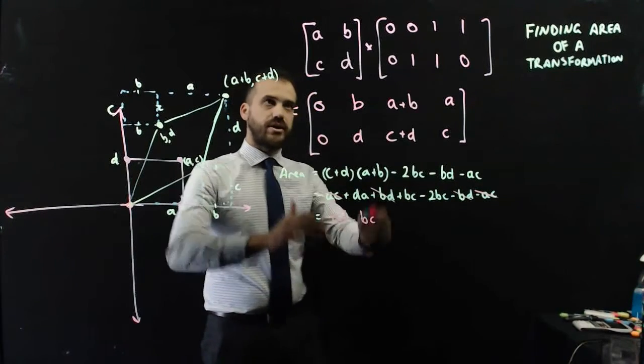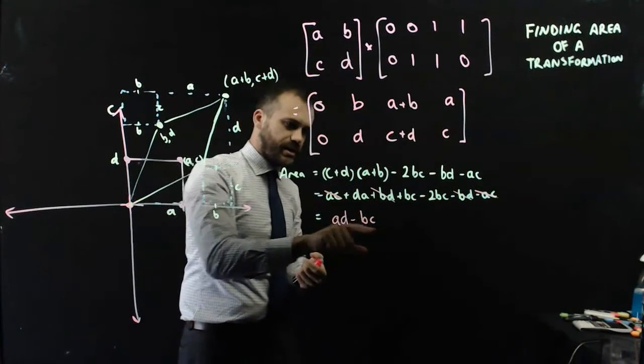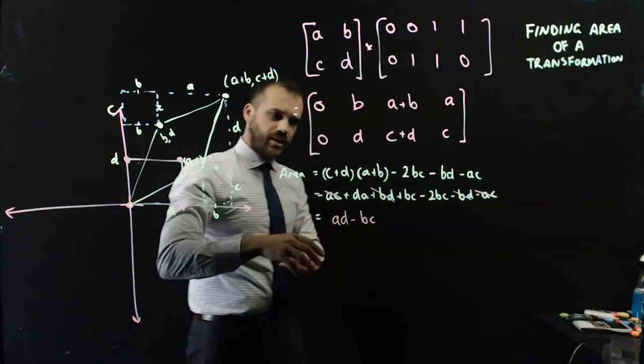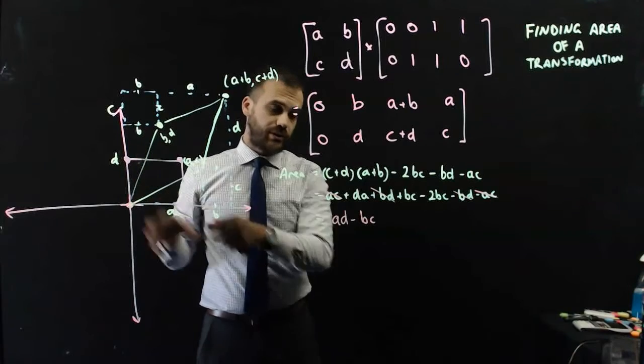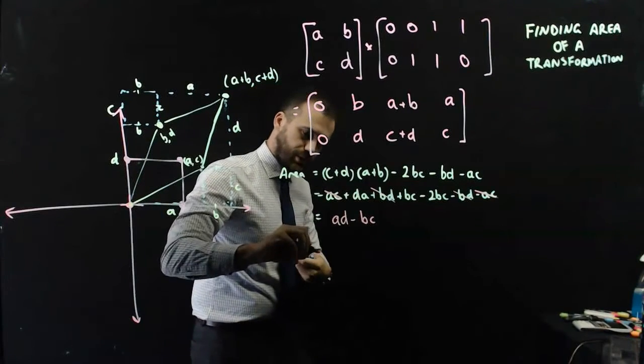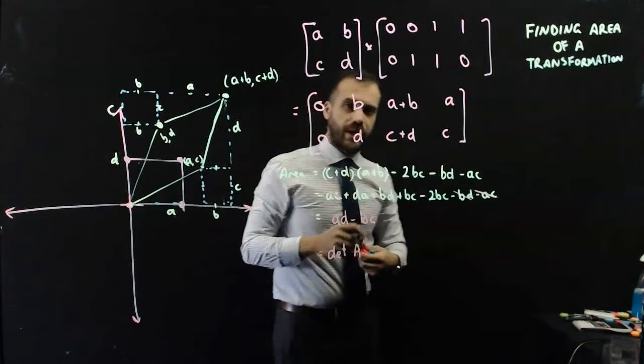Interesting. So looking at our matrix here, A, B, C, D, this thing here, AD minus BC, we can say that the area of that parallelogram is equal to the determinant of the matrix.